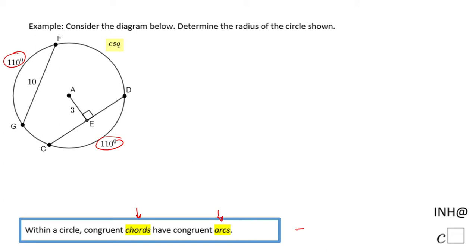If you have two congruent arcs, the chords are also equal. So basically now...